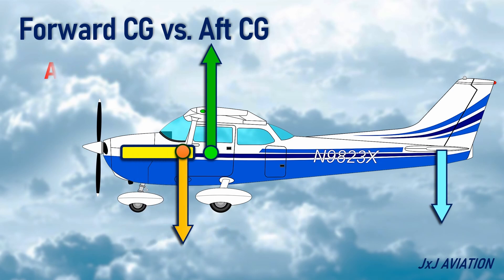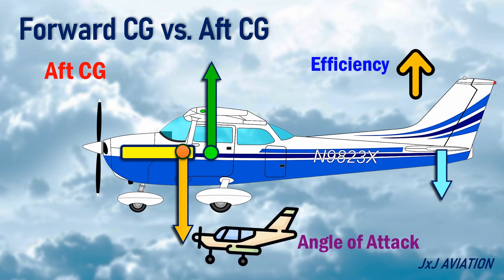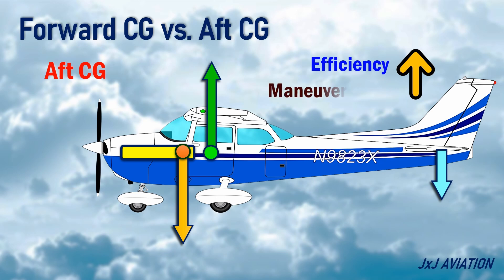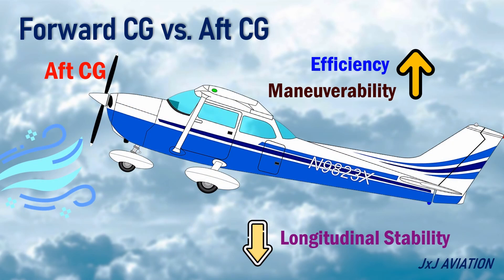An aft CG improves the efficiency of the aircraft because less force is required from the horizontal stabilizer. The aircraft needs less lift and can fly at a lower angle of attack to balance the weight, which decreases drag. Aft CG improves maneuverability; however, it decreases the longitudinal stability of the aircraft, meaning the aircraft will react more to a longitudinal disturbance compared to the same disturbance with a forward CG.